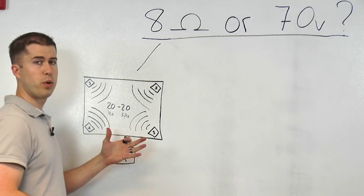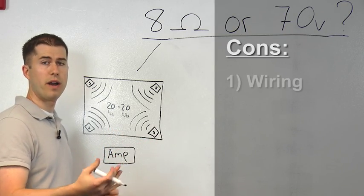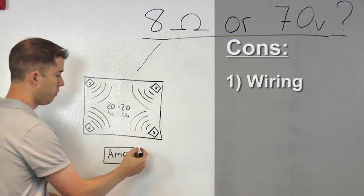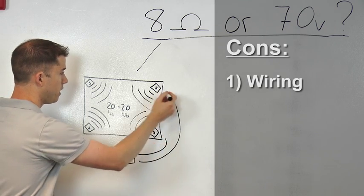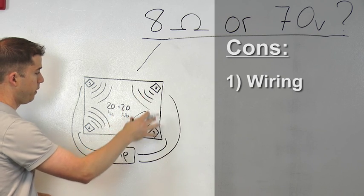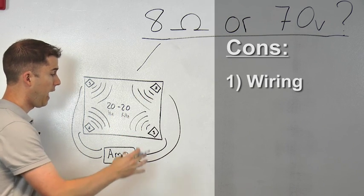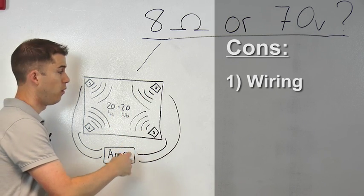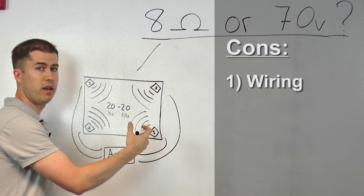However, bigger systems require more speakers for coverage, so wiring costs can add up pretty quickly. Because with an 8 ohm system, each speaker requires a dedicated wire run from the amp. Now, depending on the speaker's power handling capability and location from the amp, the wire gauge and length of run are important.